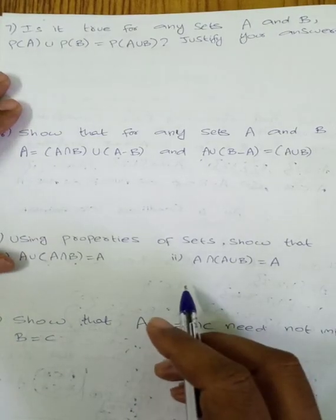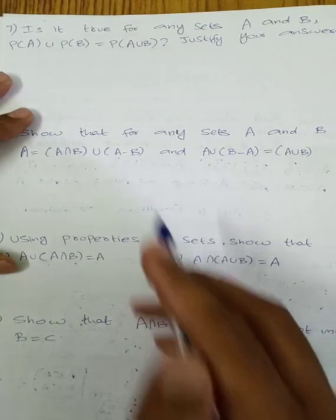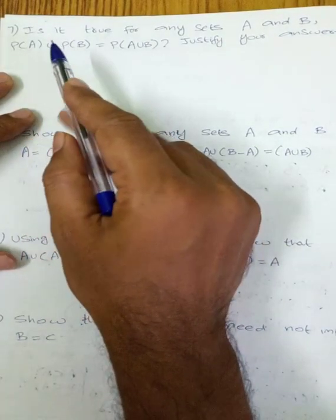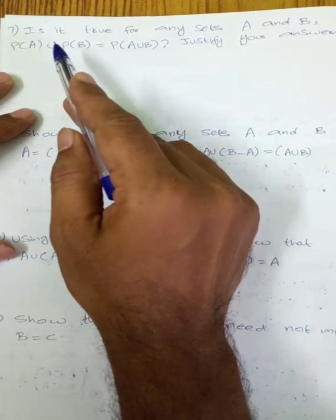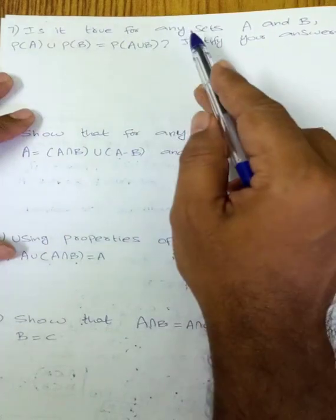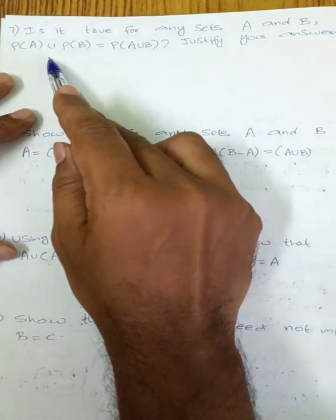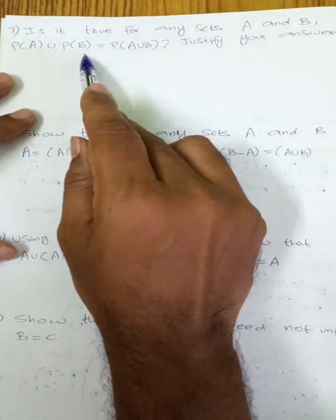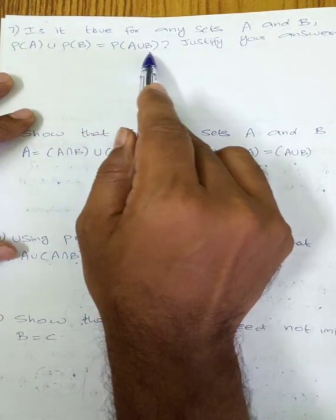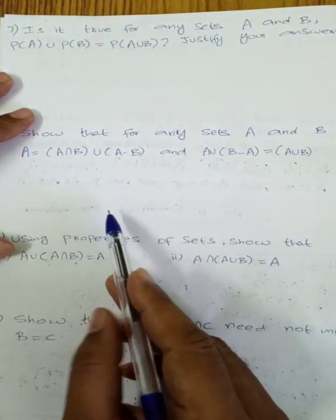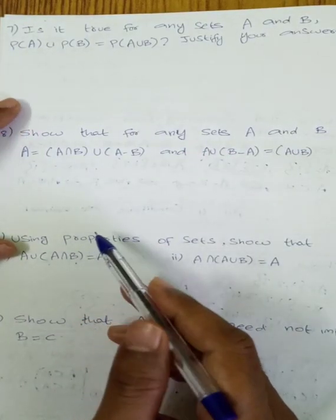Welcome students. Now we have a 7th question. Is it true for any sets A and B that P of A union P of B is equal to P of A union B? Justify your answer.